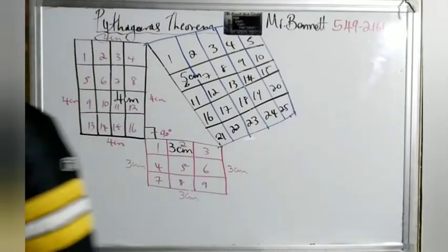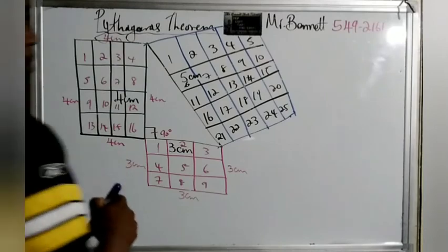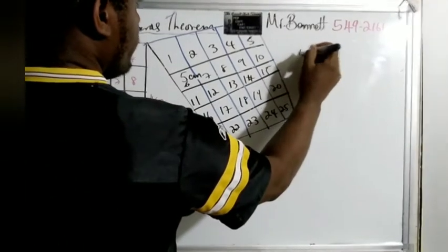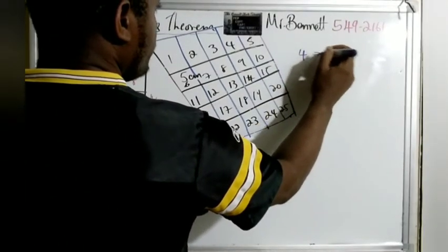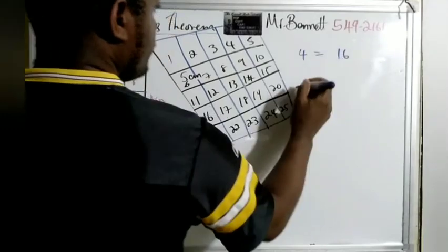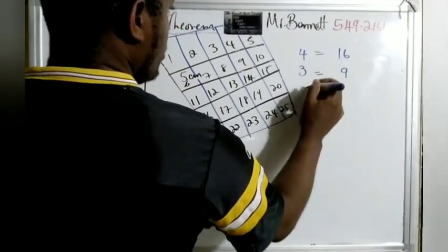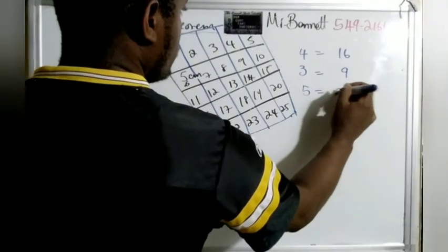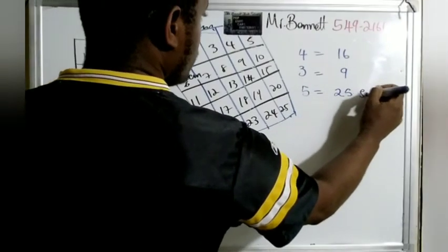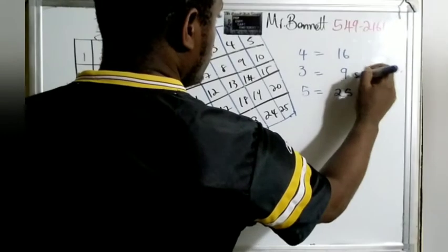Let's look at that. When we did the side with 4, it gave us 16. The side with 3 gave us 9. The side with 5 gave us 25 squares. These are all squares.